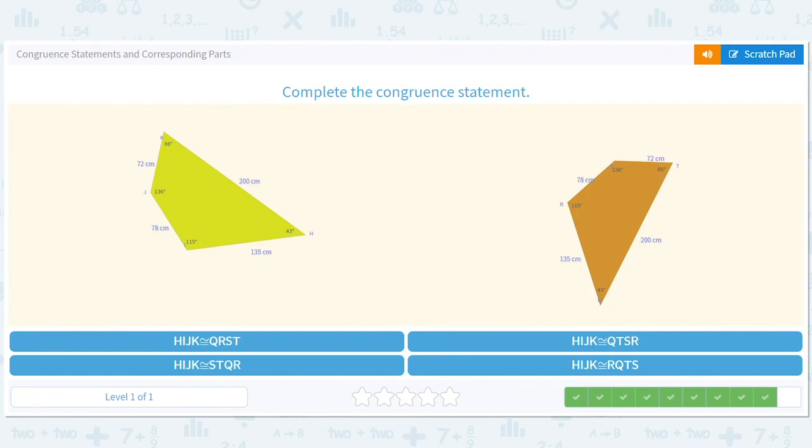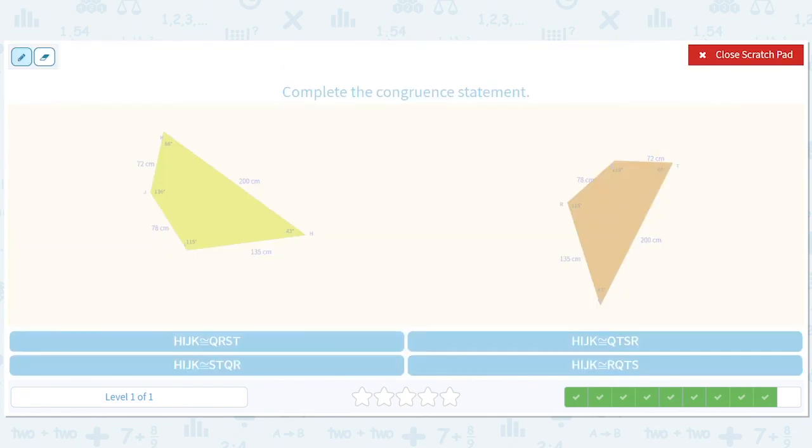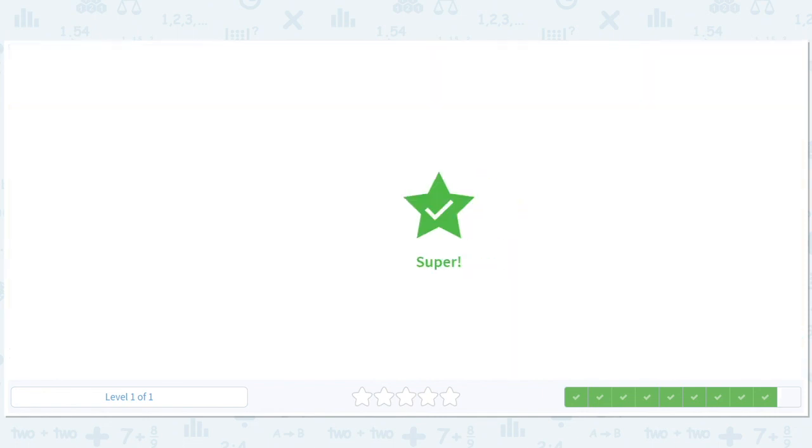And last one. They're not so bad. You just have to label them. So H, I, J, K. That's one, two, three, four. And the H is 43 degrees. So that's going to be this. The I is 115. So that's going to be this. The J is 136. That's going to be this. And the K is going to be this. So it should be, I think that's a Q. Yeah. Q, R, S, T. Cool. That's just alphabetical order. Hooray. Q, R, S, T.